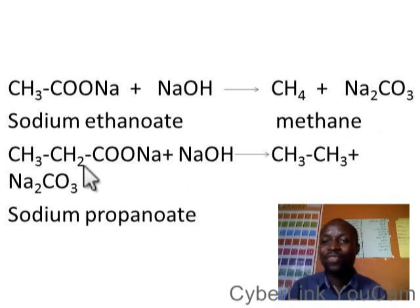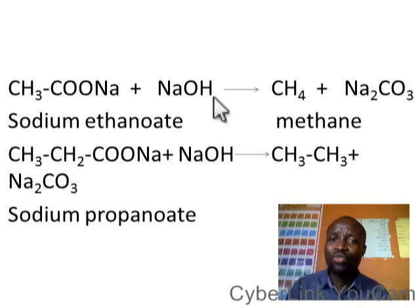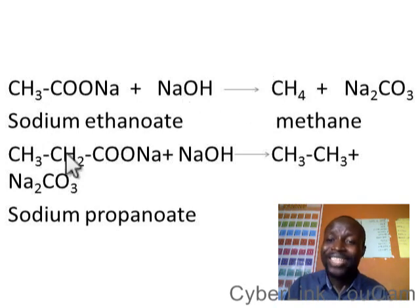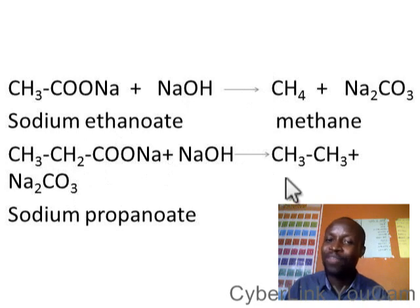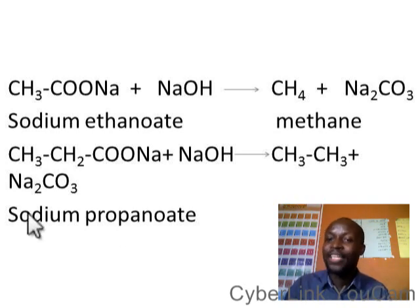If you use a higher alkanoate with more carbon atoms, you produce a higher alkane. The pattern is: a two-carbon alkanoate gives a one-carbon alkane; a three-carbon alkanoate gives a two-carbon alkane; a four-carbon alkanoate gives a three-carbon alkane; a five-carbon alkanoate gives a four-carbon alkane. That's the pattern.